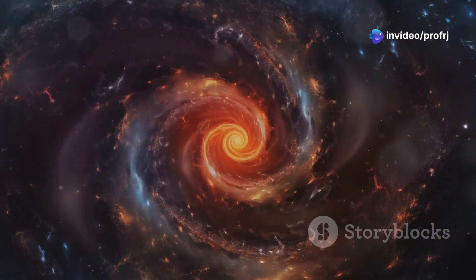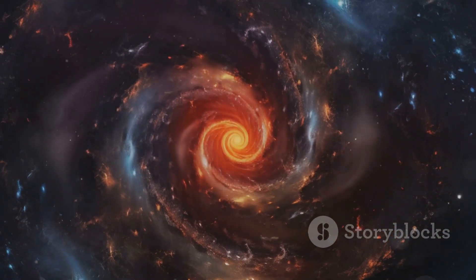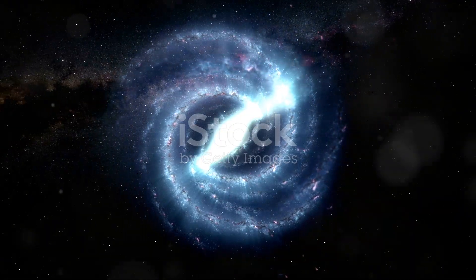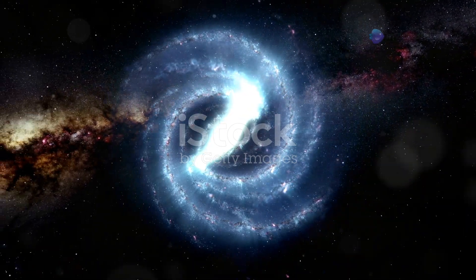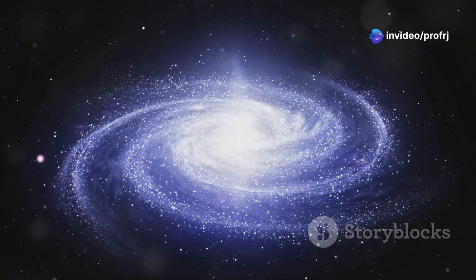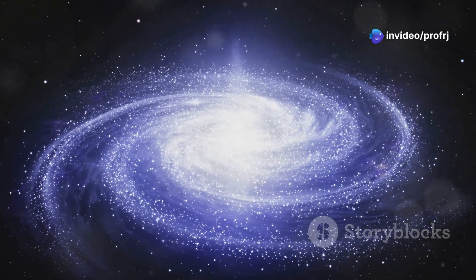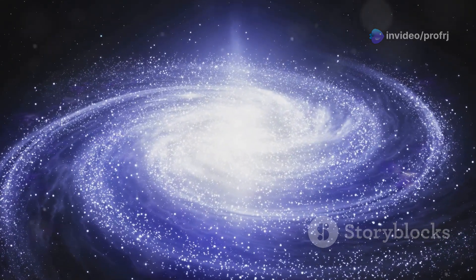Galaxies didn't stay static - they evolved over time. Spiral galaxies like our Milky Way formed through the cooling and spinning of gas, creating the iconic disc and spiral arms. Elliptical galaxies emerged when galaxies collided, merging their stars into a more rounded shape.